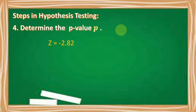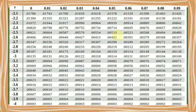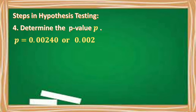Number four, determine the p-value given the computed Z-score of negative 2.82. We're going to use the Z-table. To find the p-value or area, look for the first two digits in the first column — that's negative 2.8 — then the third digit in the first row, which is 0.02. Getting their intersection, we have 0.0024. So our p-value is equal to 0.0024 or 0.002.